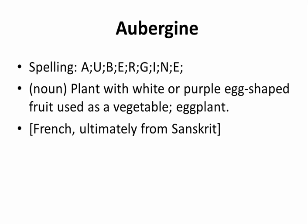Aubergine. Spelling: A-U-B-E-R-G-I-N-E. Noun. Plant with white or purple egg-shaped fruit used as a vegetable; eggplant. French, ultimately from Sanskrit.